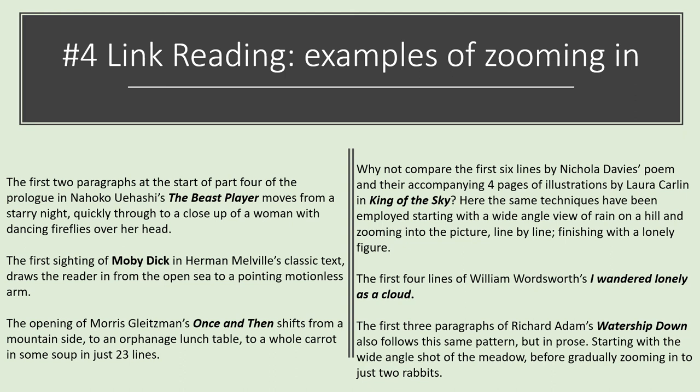It also works in picture books — in Nicola Davies's poem in her picture book King of the Sky, you can see the same technique going from rain on a hill to a lonely figure. Or think about William Wordsworth's I Wandered Lonely as a Cloud. The first three paragraphs of Richard Adams' Watership Down are also a great example of how we gradually zoom in from a meadow to just two rabbits. I hope you've enjoyed thinking about how we can use zooming in to create tension and mood, and we hope you join us again soon.